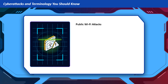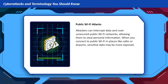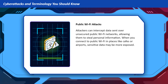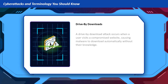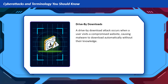Public Wi-Fi attacks: attackers can intercept data sent over unsecured public Wi-Fi networks, allowing them to steal personal information. When you connect to public Wi-Fi in places like cafes or airports, sensitive data may be more exposed. Drive-by downloads: a drive-by download attack occurs when a user visits a compromised website, causing malware to download automatically without their knowledge.